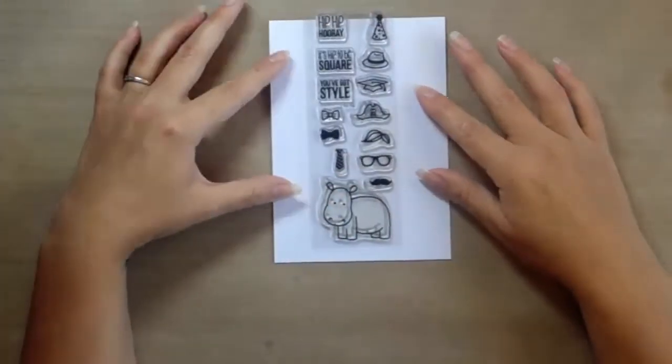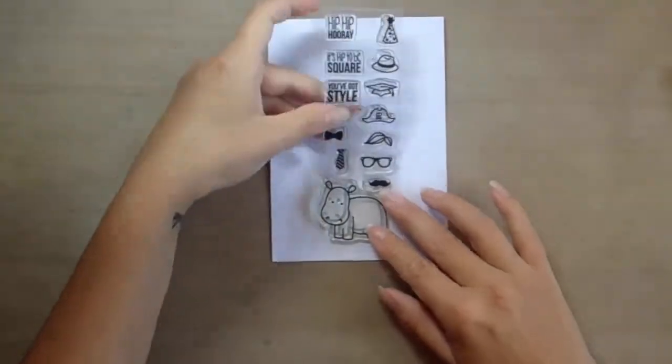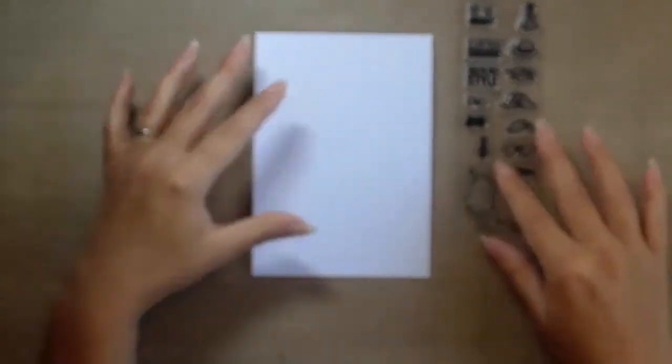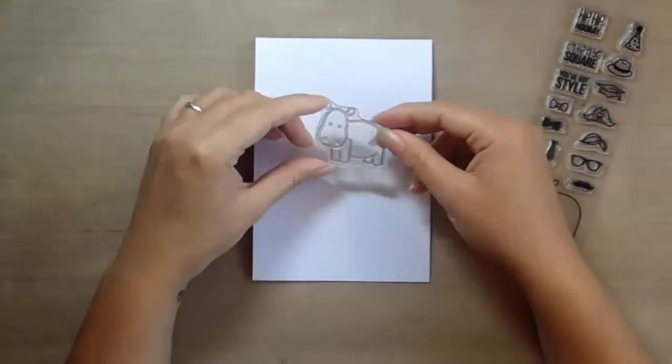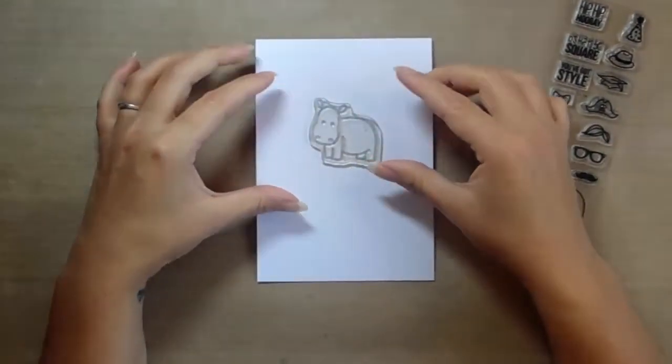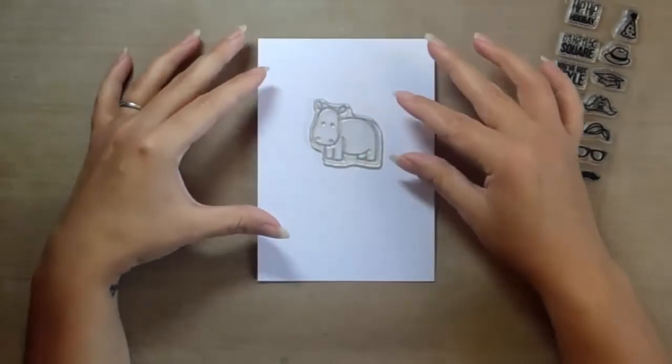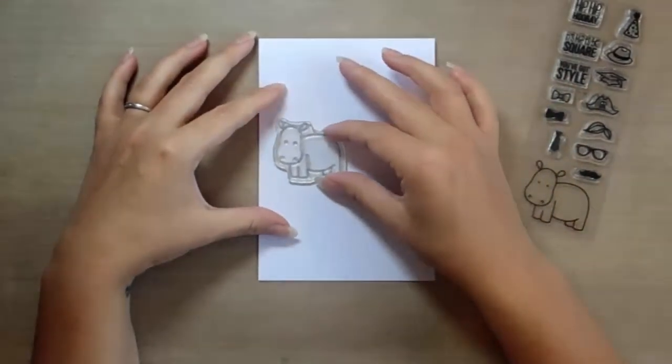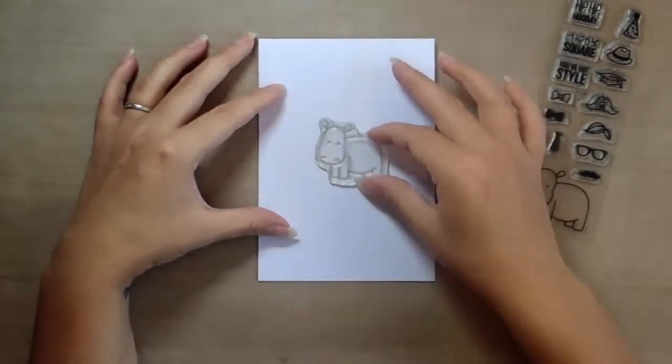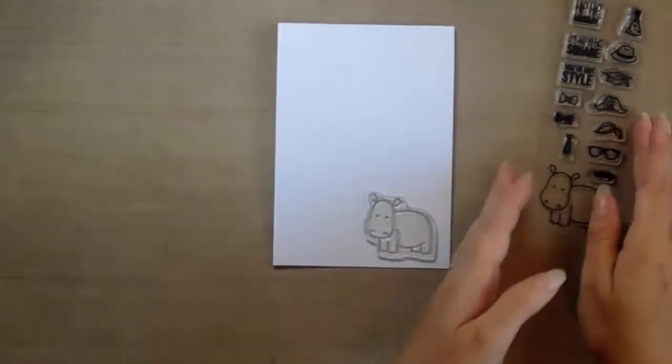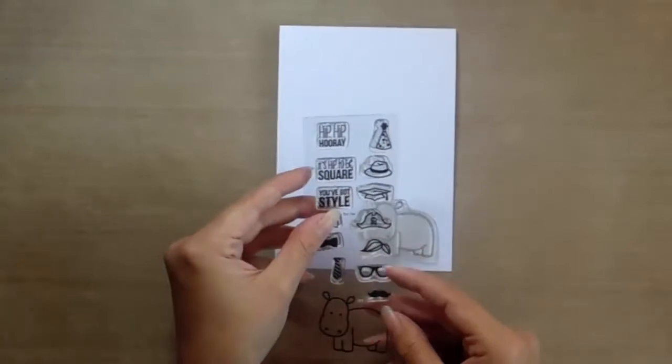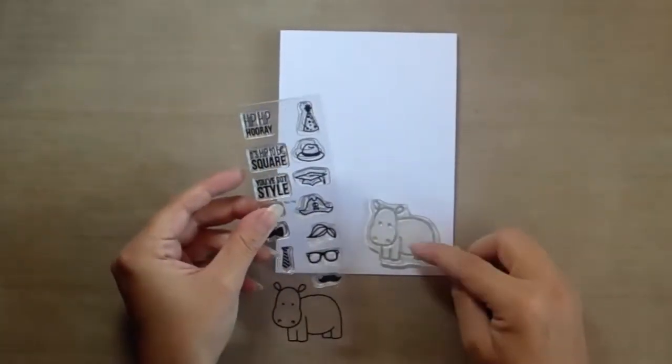For a one layer card it's best to use the masking technique. To do this you need to know where your images are going to be. You need to first place, it's easy if you first place your stamp and know exactly where on that card you want that stamp to be. You need to make a rough estimate because you will need to be adding the accessories to the image first.